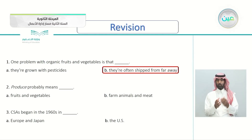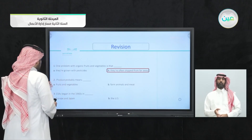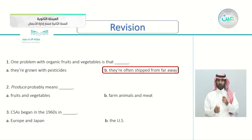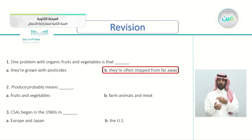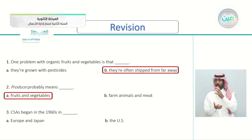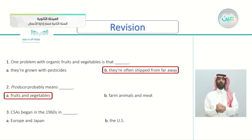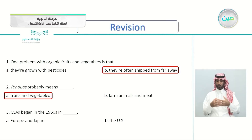Question two: 'produce' probably means — A: fruits and vegetables, or B: farm animals and meat. That's correct, it's A. When they say 'produce' it means fruits and vegetables. Question three: CSAs began in the 1960s in — A: Europe and Japan, or B: the US. Where did it begin?